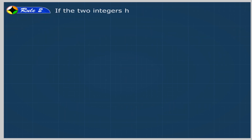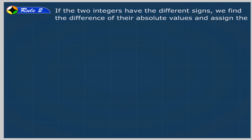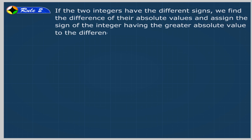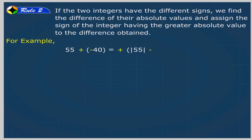Rule 2: If the two integers have different signs, we find the difference of their absolute values and assign the sign of the integer having the greater absolute value to the difference obtained. For example, 55 + (−40) is equal to plus (|55| − |−40|) is equal to +(55 − 40) is equal to +15.